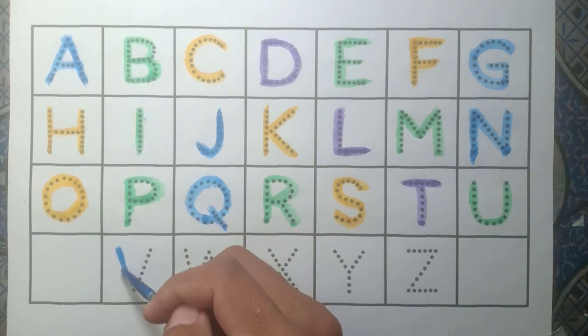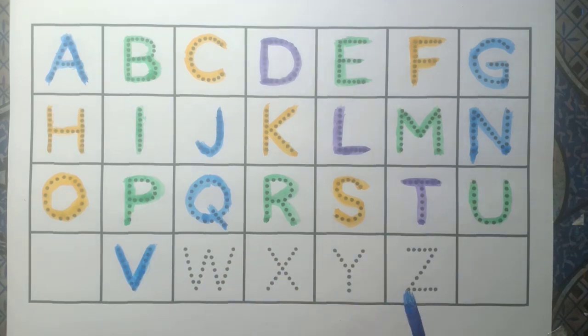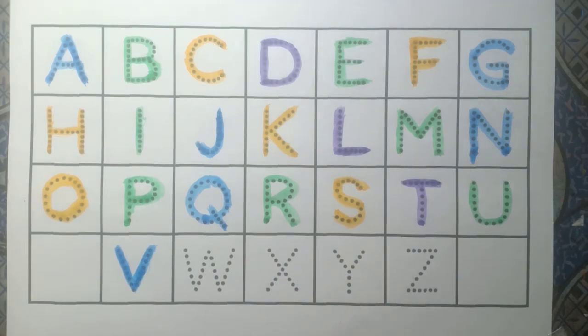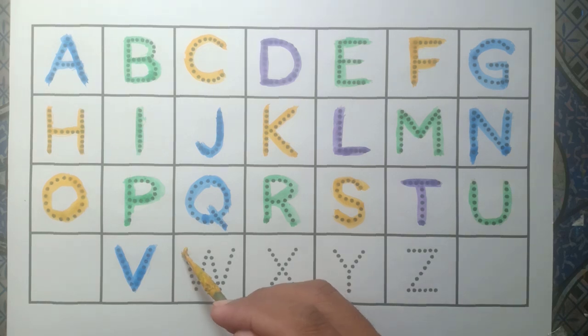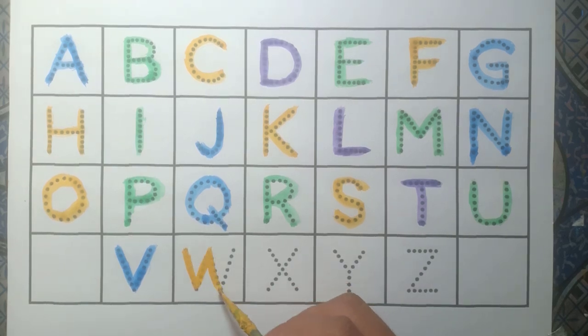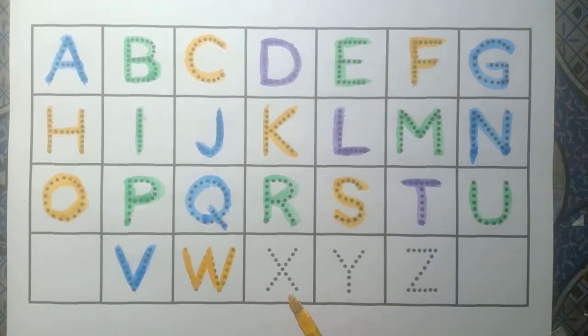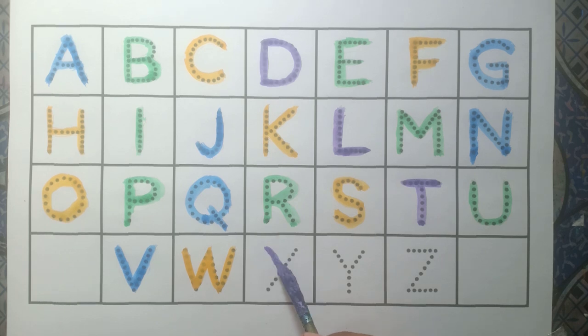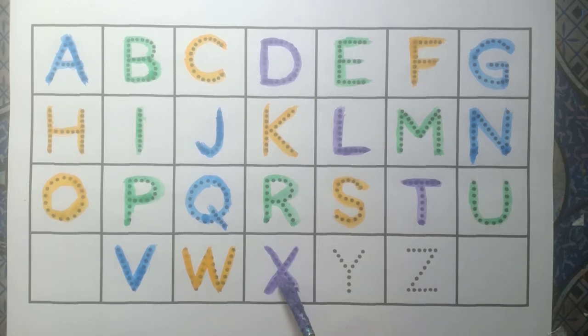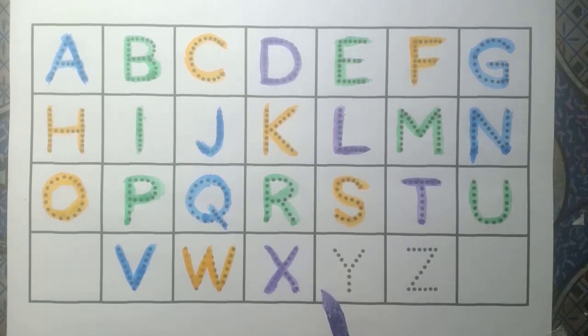And V, V for violin, blue color. And W, W for wolf, yellow color. And X, X for xylophone, purple color.